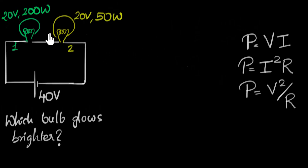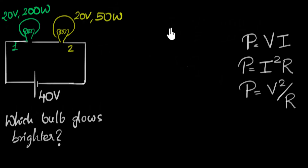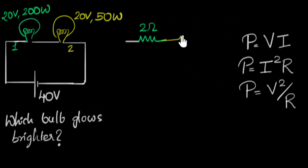Let's directly jump to calculating the resistance. To calculate resistance, we need a connection between voltage, power, and resistance, so just like before we use P equals V squared over R for each bulb. If you do that, the first bulb has a resistance of 2 ohms and the second bulb has a resistance of 8 ohms. You can pause and verify that.